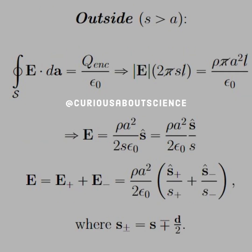Now for outside the cylinder, we get a little more mess because things don't cancel as well. Again we'll use Gauss's law. The surface area of the cylinder outside is 2π S L, but the Q enclosed only goes up to the radius A of the physical cylinder. So our cancellations only work with π and L, but the radii still have to be accounted for. Solving for the E field, we see that we have rho A² over 2S epsilon naught in the S-hat direction.